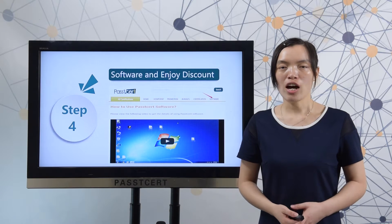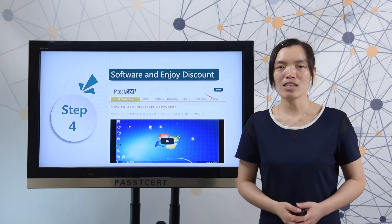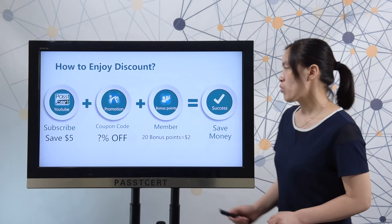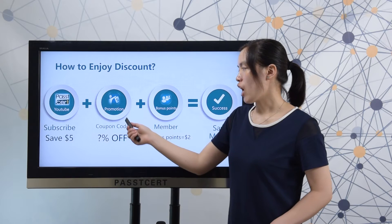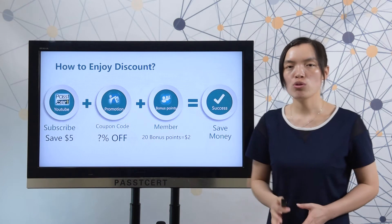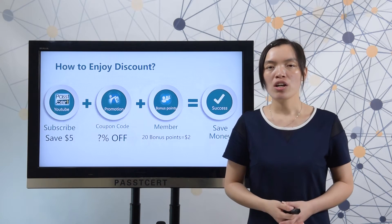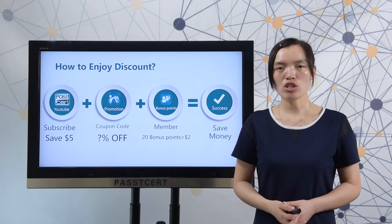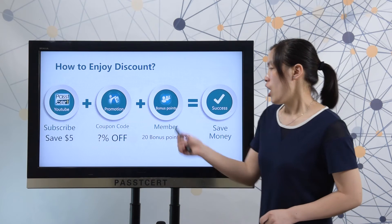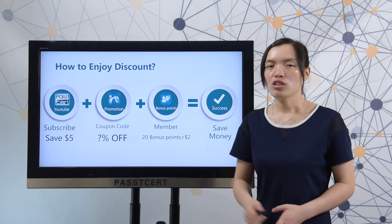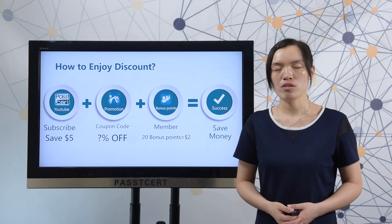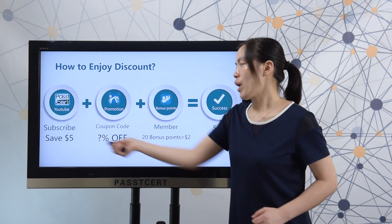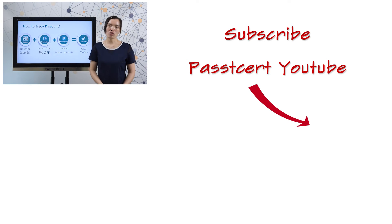Finally, let's view how to enjoy a discount at PathT3.com. Subscribe to PathT3's YouTube channel and you can get a $5 USD coupon code. In our promotion page, we will show you our current sales promotions, and you can use coupon codes to enjoy a discount. After you become our member, you can get 20 balance points, which are equal to $2. With all this, when you make a purchase at PathT3.com, you can save much money.